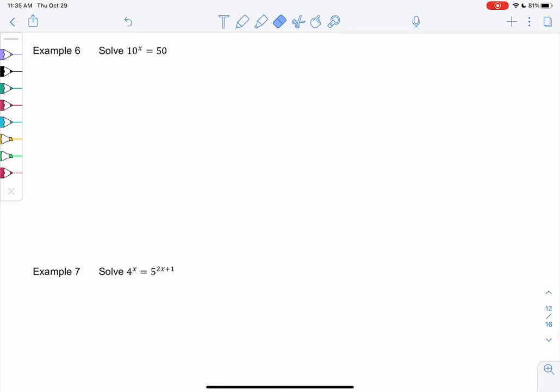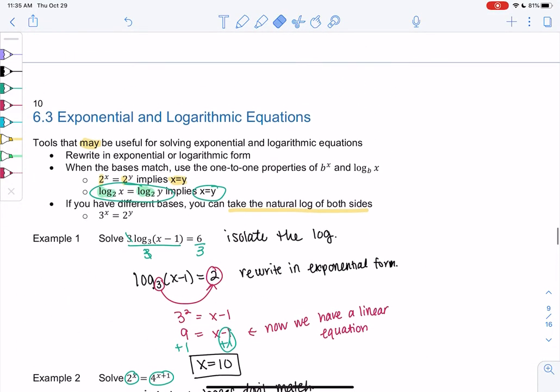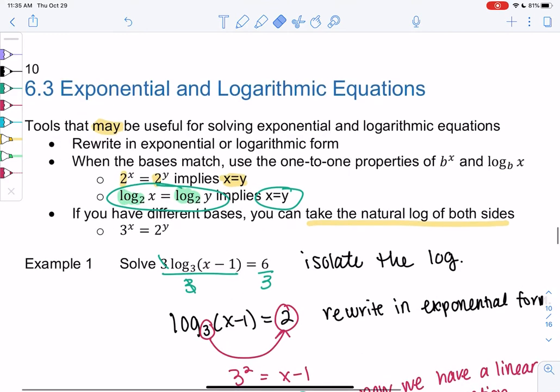Example 6 and 7. So now we'll solve equations when the bases don't match. We've already gone over rewriting in exponential or logarithmic form. We've already done it when the bases match using that one-to-one property. So the last two examples we're going to deal with when we have different bases, we're going to take the natural log of both sides.